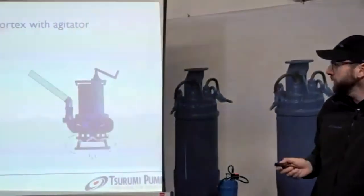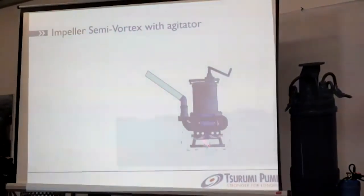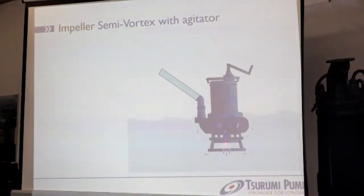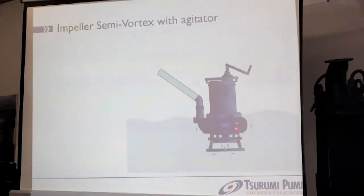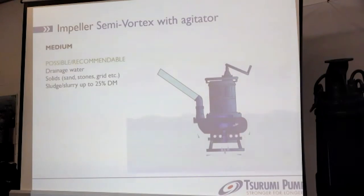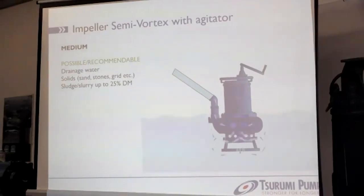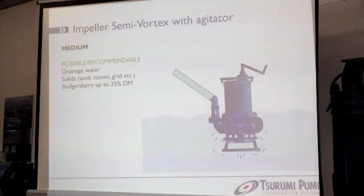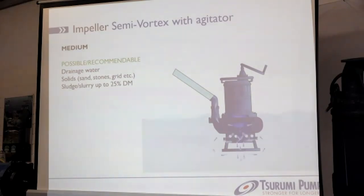The agitator hat rotates, creating a downward streaming that crowds up the medium, and then the pump sucks it in and transports it away as a mixture. Recommended mediums are drainage water, solids like sand, stones, gravel, and slurry up to 25% dry matter — but remember 25% is the maximum for the biggest agitator pump, the GPM, not the smaller ones. Please consult us to check values for smaller pumps.